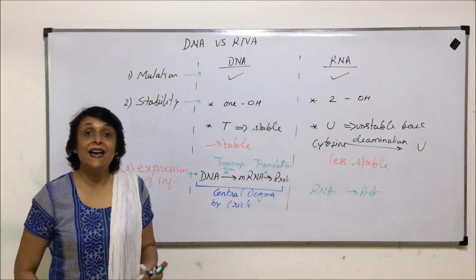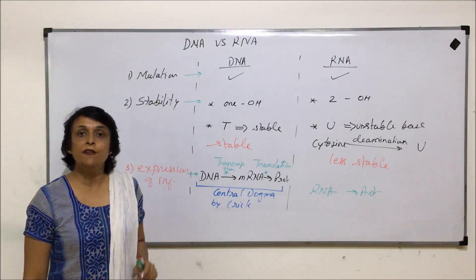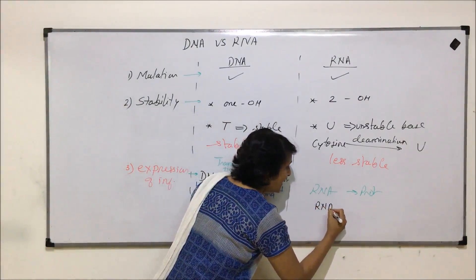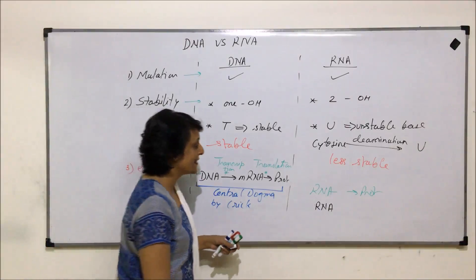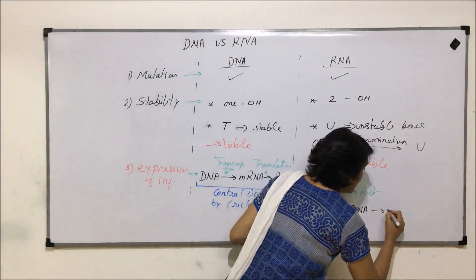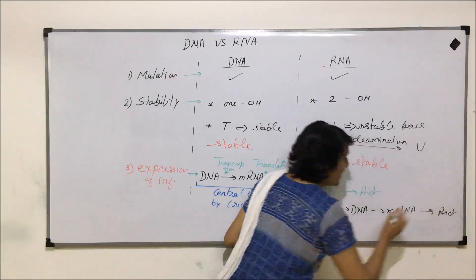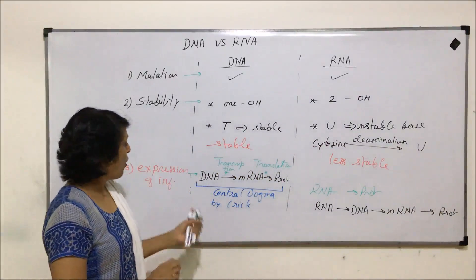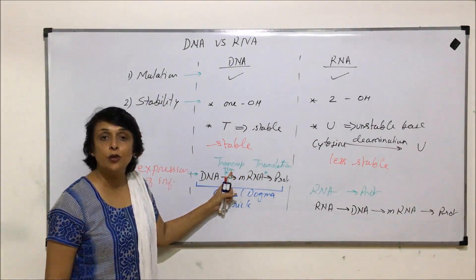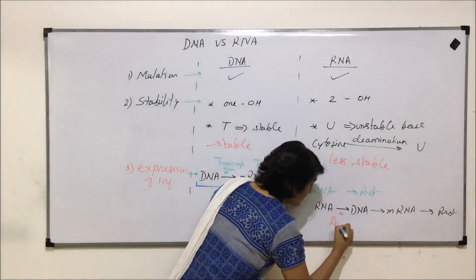When RNA is the genetic material — as in certain viruses — the expression pathway is different. RNA first synthesizes DNA, then this DNA forms mRNA, and from mRNA protein synthesis proceeds. The conversion from RNA to DNA goes in the reverse direction, so this process is known as reverse transcription.